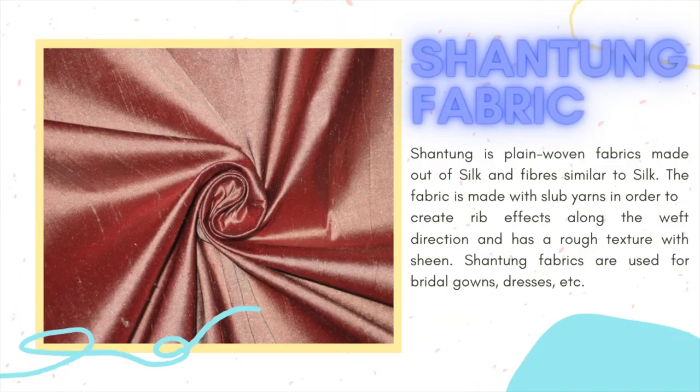Shantung fabric. Shantung is a plain-woven fabric made out of silk and fibers similar to silk. The fabric is made with slub yarns in order to create ribbed effects along the weft direction and has a rough texture with sheen. Shantung fabrics are used for bridal gowns, dresses, etc.